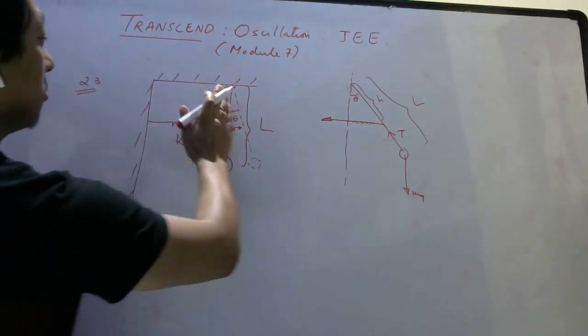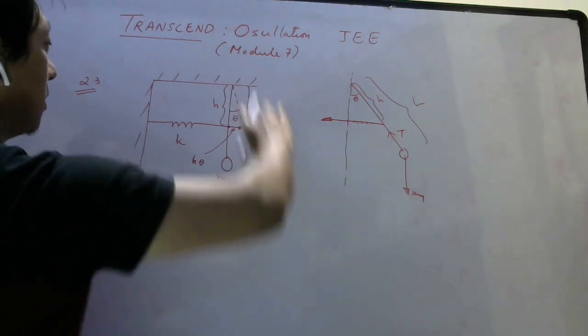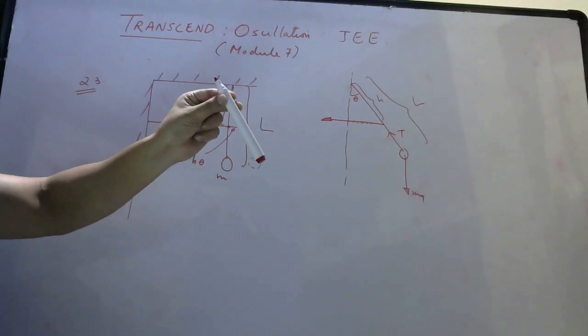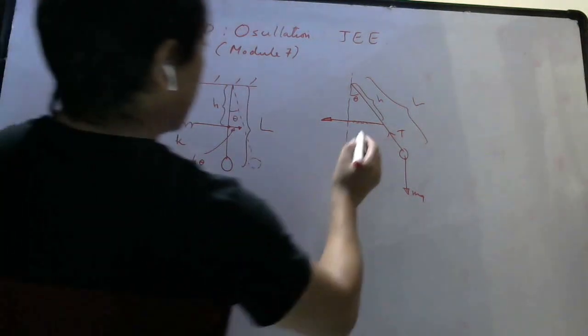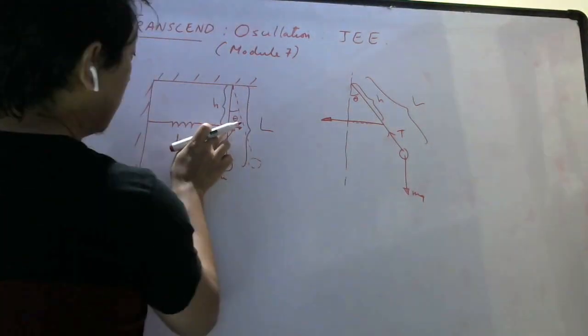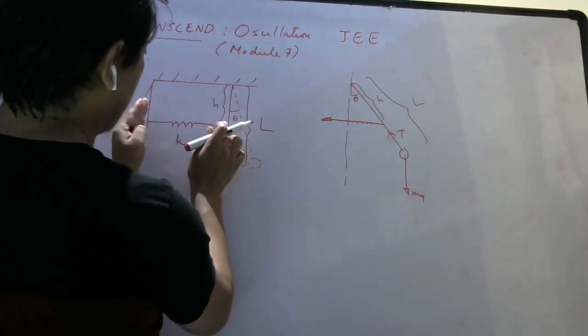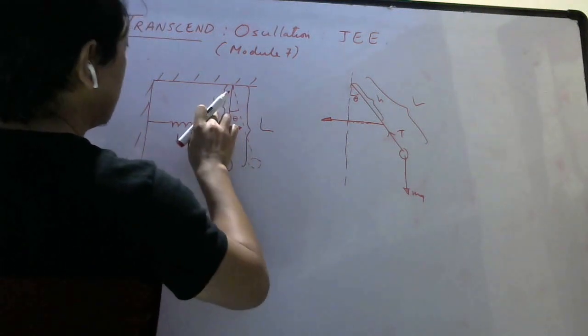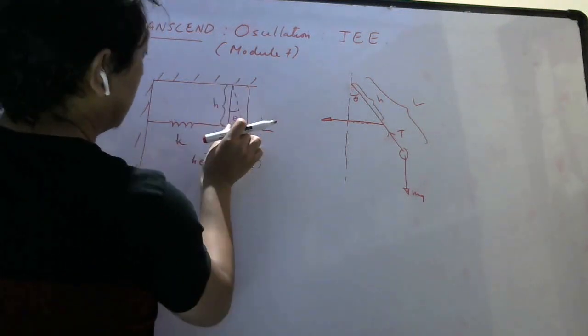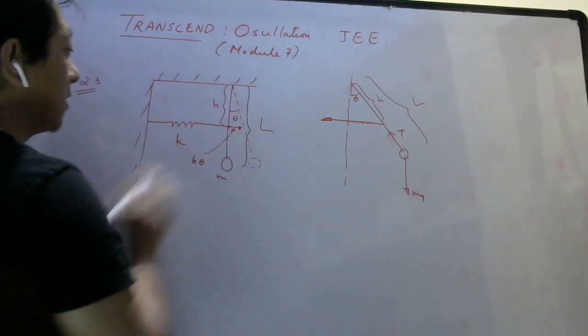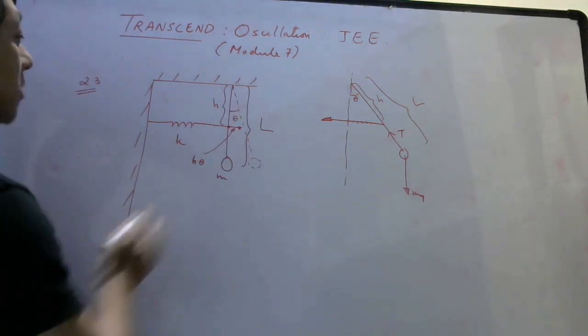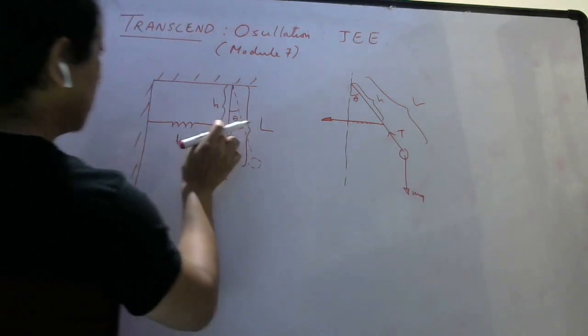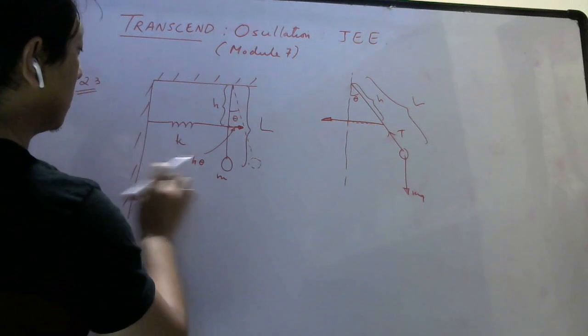When it goes like this, this will be H and the whole length will be L. If I do like this, the length doesn't change. The extension of the spring is how much? It travels a distance H into tan theta, but for small angles tan theta is the same as theta. In short, you can consider this as an arc.